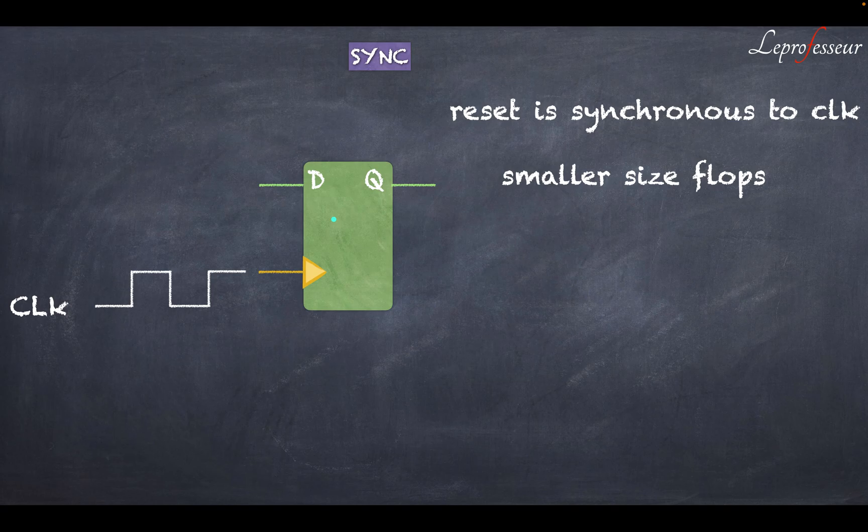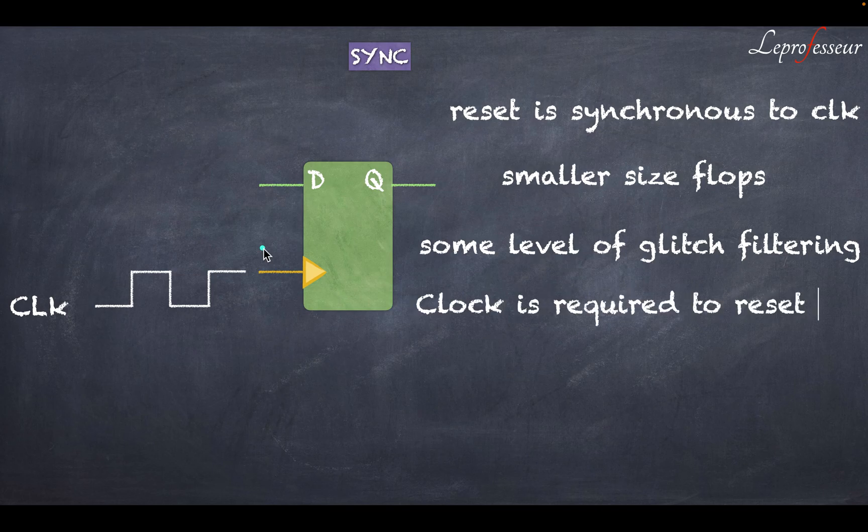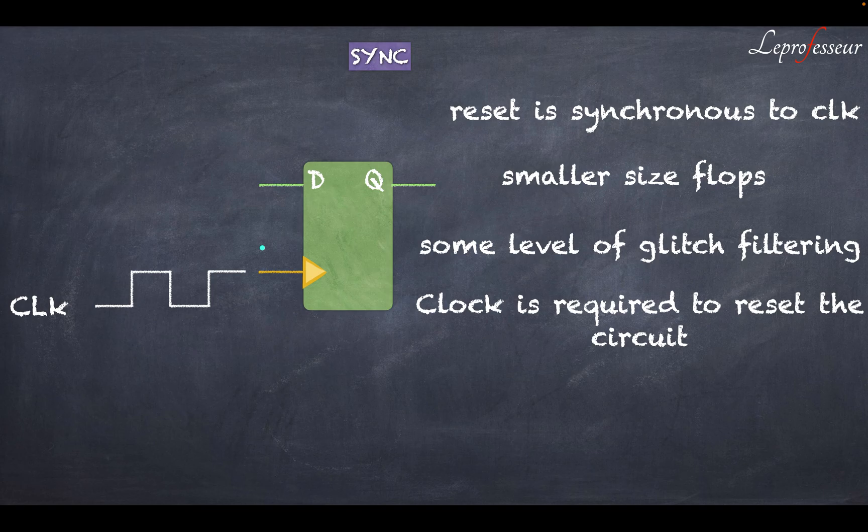It will have a smaller area and this clock will do glitch filtering on the reset. For example, unless the reset is toggling at the same time as the clock edges, you cannot filter that glitch, but in general you don't have to worry about the glitch on the reset path. And as we said earlier, clock is required for resetting this circuit.